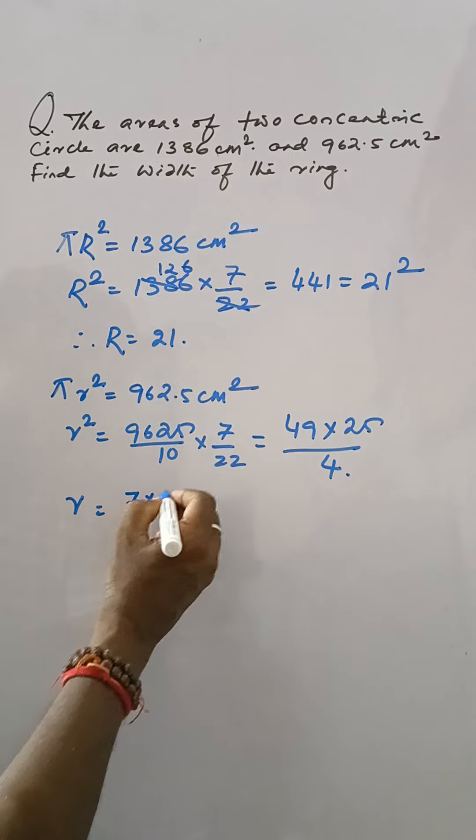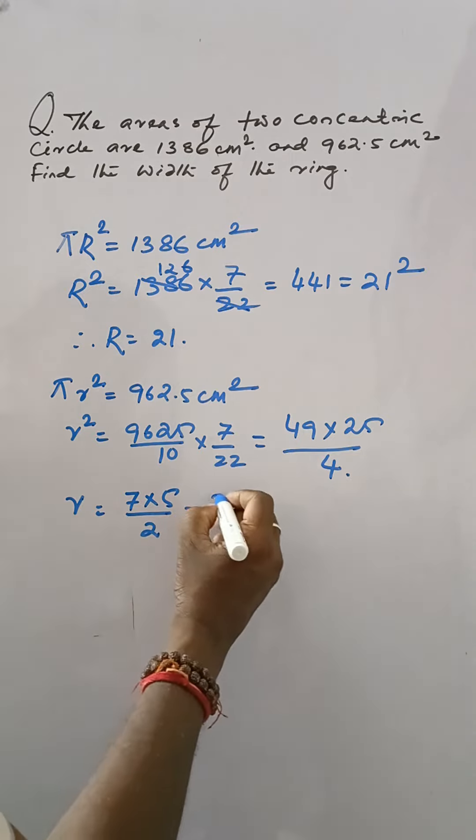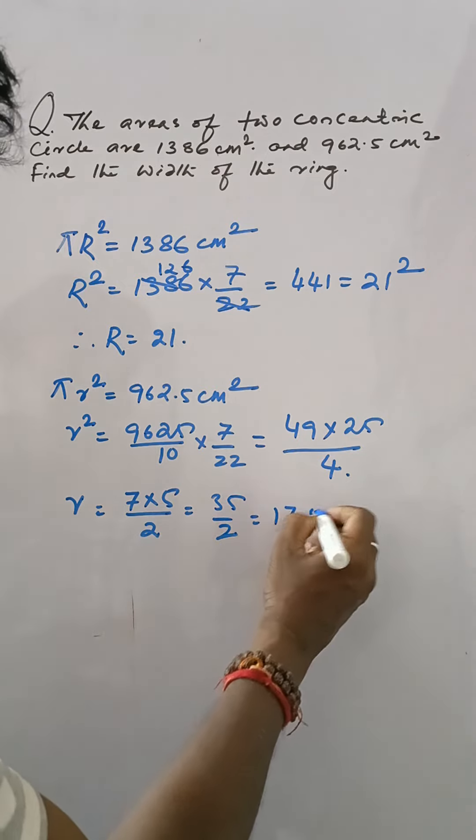r is equal to 7 into 5 by 2. That means 35 by 2 which is 17.5.